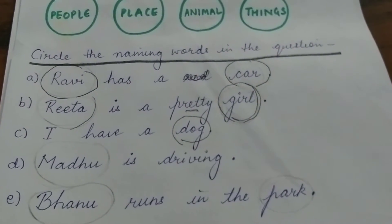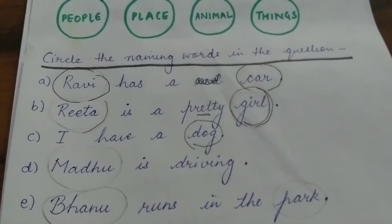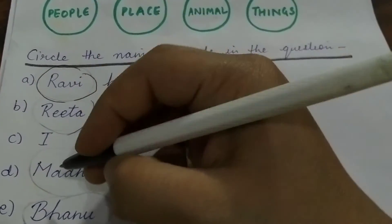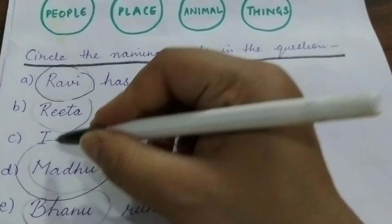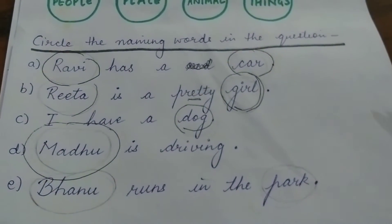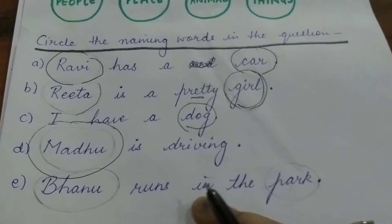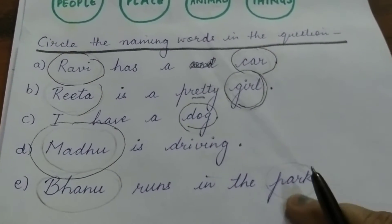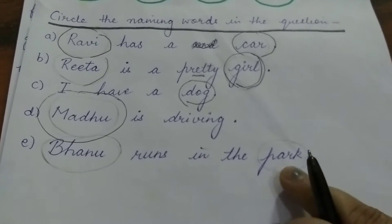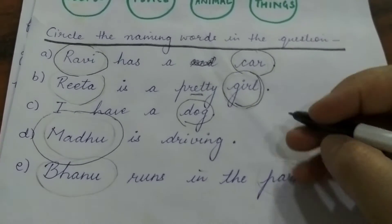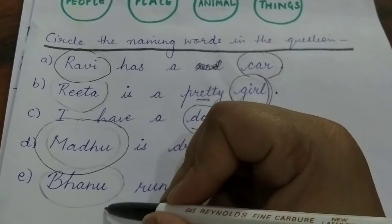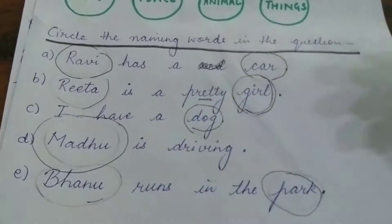Madhu is driving. So Madhu is the name of a person — you will circle Madhu. Bhanu runs in the park. Bhanu is the name of a girl and park is a place. So we will circle Bhanu and park.